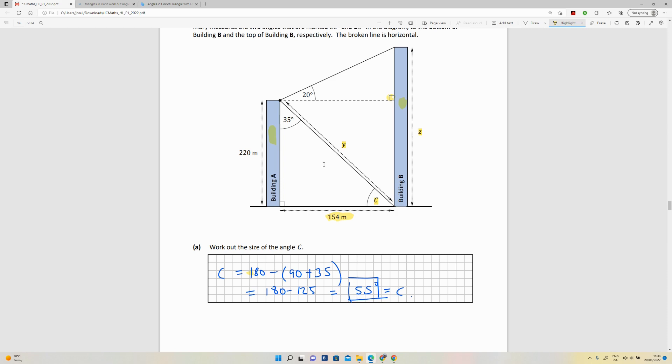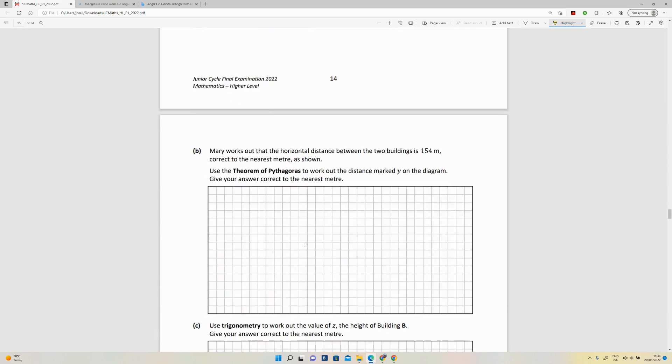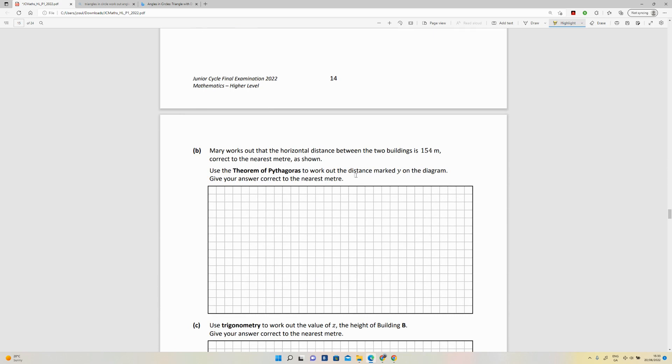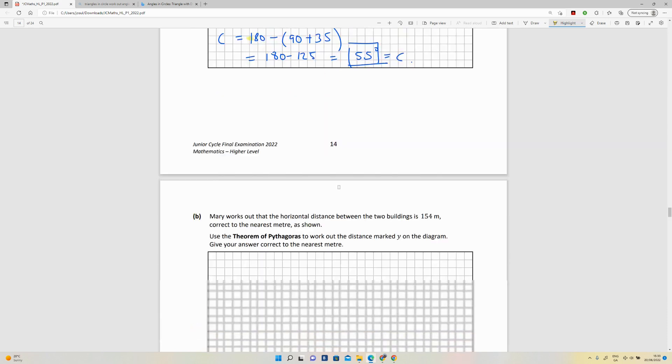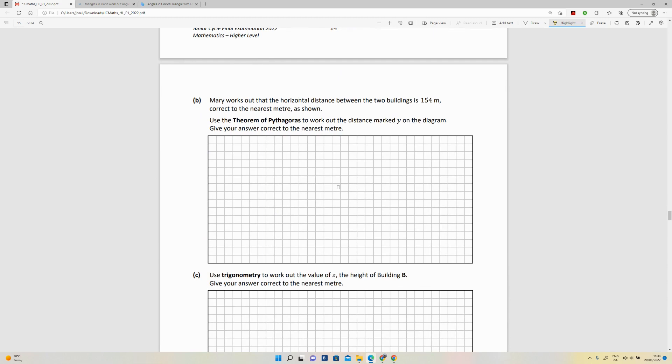Use the theorem of Pythagoras to work out the distance marked y. So we know that this angle here is the right angle, and we know that this is 35. So we've got 35, we've got the 154, so that's good. So we can use the Pythagoras theorem to help us with this.